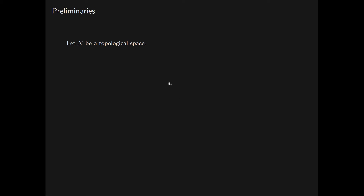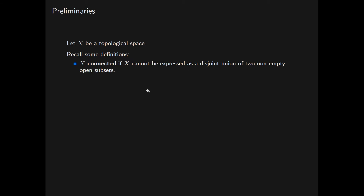Let X be a topological space. We're assuming that you are familiar with the definition of a topological space as well as the notion of an open subset of X and a closed subset of X. We recall the following definitions: we say that X is connected if it cannot be expressed as a disjoint union of two non-empty open subsets.